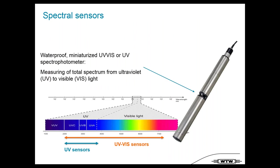The next topic is spectral sensors. We have a waterproof miniaturized UV-Vis spectrometer measuring the total spectrum from ultraviolet to visible light. Our UV sensors work from 200 to 390 nanometers and the UV-Vis sensors from 200 to 720 nanometers.